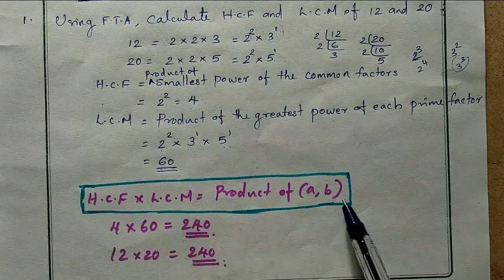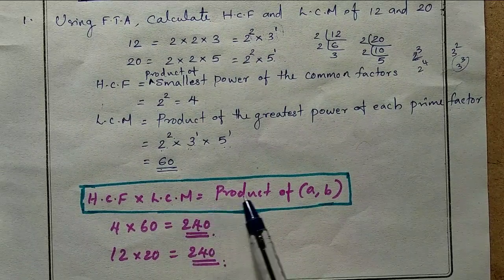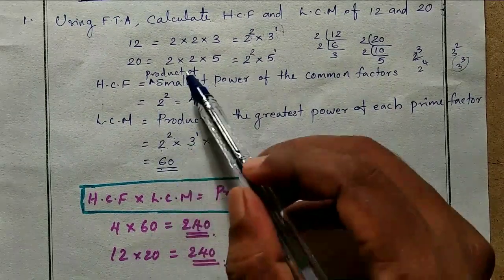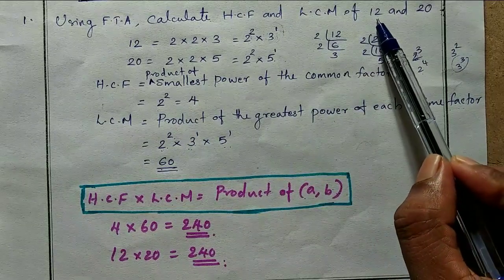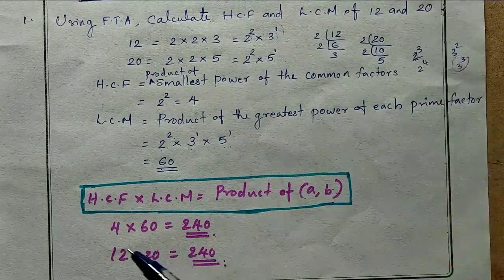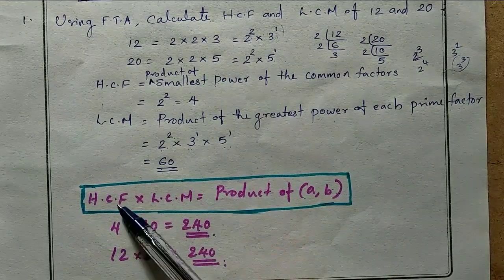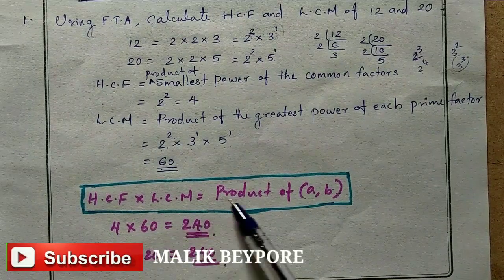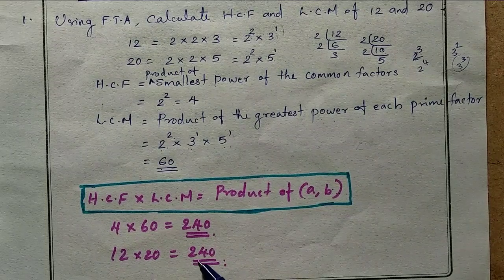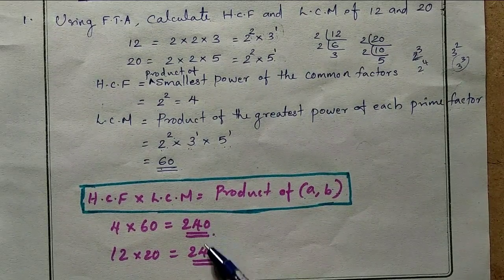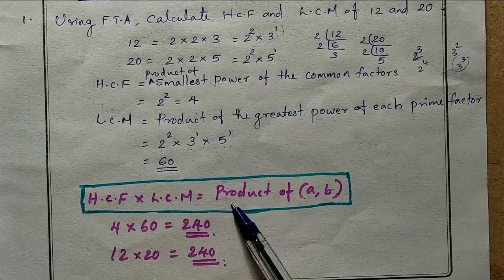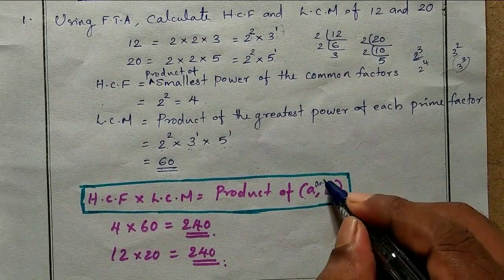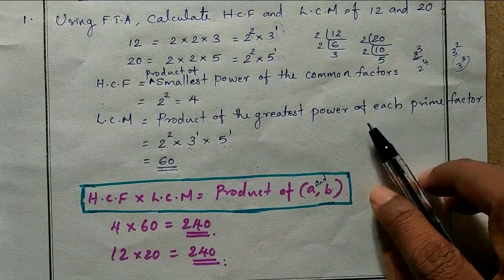There is an important result: HCF × LCM = product of the two numbers (a × b). In this problem, a = 12 and b = 20, HCF = 4 and LCM = 60. Checking: 4 × 60 = 240, and 12 × 20 = 240. Both are equal, confirming that HCF × LCM = product of a and b. Thanks for watching — please wait for the next video!